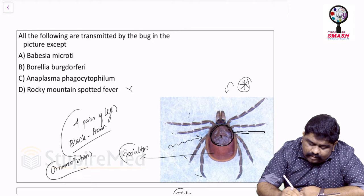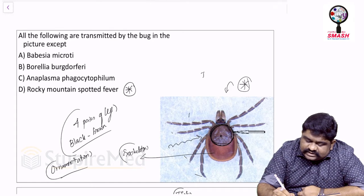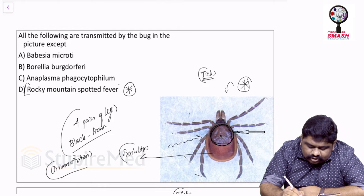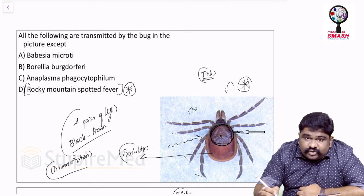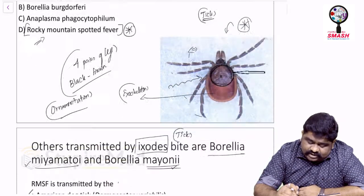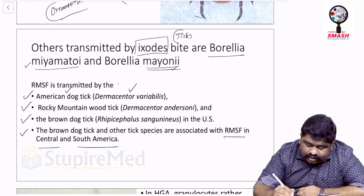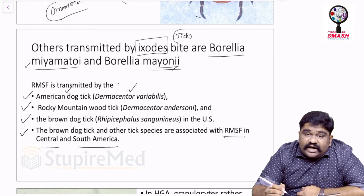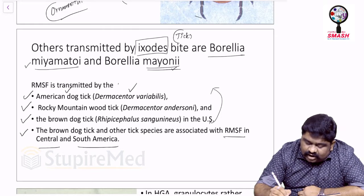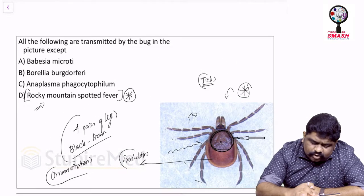The answer is Rocky Mountain spotted fever. The question may look easy if you recognize it as a tick, but RMSF is also transferred by a tick — just not Ixodes. The tick that spreads RMSF would be Dermacentor variabilis (American dog tick), Dermacentor andersoni (Rocky Mountain wood tick), and Rhipicephalus sanguineus (brown dog tick) — three major ticks, none of which is Ixodes.